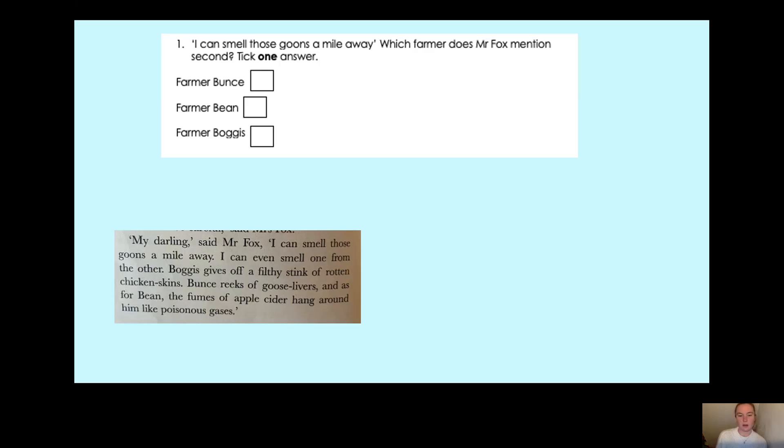So my darling, said Mr. Fox, I can smell those goons a mile away. I can even smell one from the other. Boggis gives off a filthy stink of rotten chicken skins, Bunce reeks of goose livers, and as for Bean, the fumes of apple cider hang around him like poisonous gases.